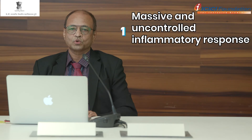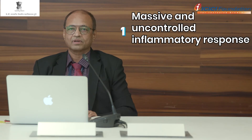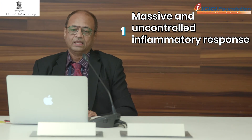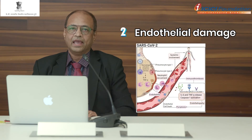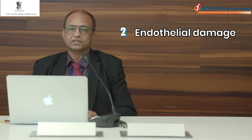It is important to know about these pathological alterations because when managing these patients, we have to address this uncontrolled and massive inflammation. Another key development is endothelial cell damage of the vascular tree — specifically the vessels of the pulmonary circulation, as well as other vasculature.